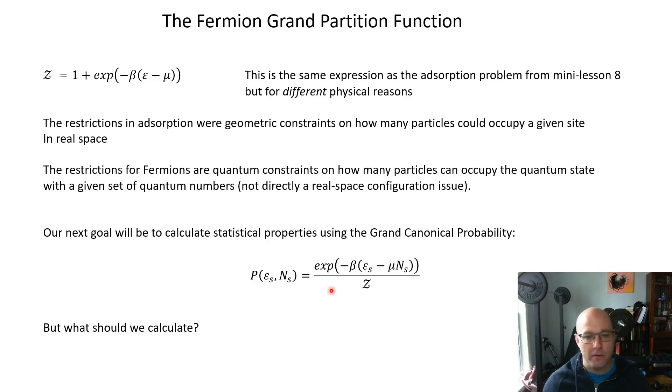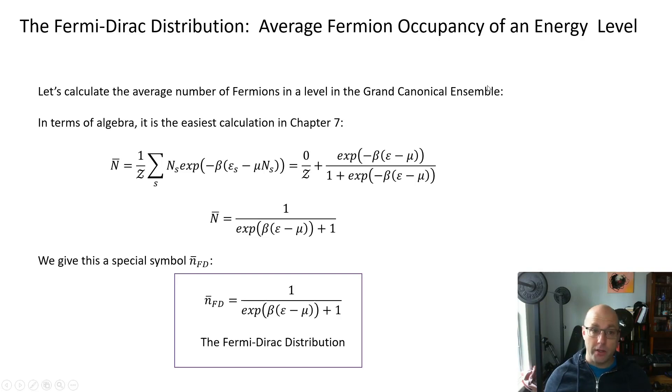So let's calculate some statistical properties. We can get the grand canonical probability from Z by taking the Gibbs factor in the top and dividing it by the grand partition function. But what are we actually going to calculate from this? The straightforward thing to calculate is what is the average occupancy of an energy level. In other words, the average number of fermions in the level. You can imagine taking that level and doing a series of measurements on it in time. Each time you measure it it's either going to be a one or a zero, and then if you average over time all those ones and zeros, what answer would you get? That's what we're asking.